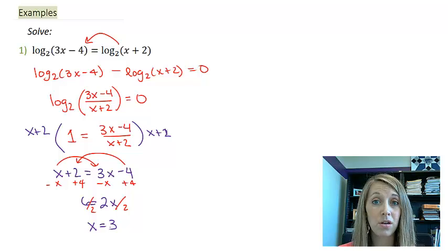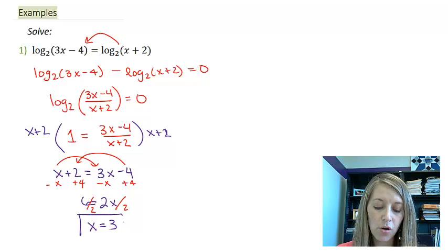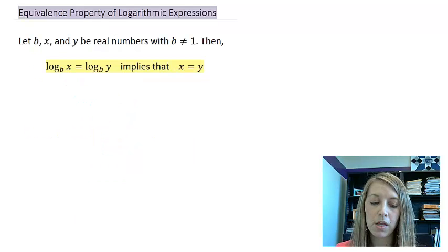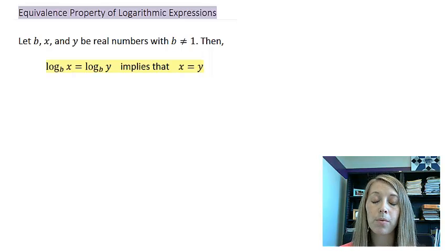And if I were to divide by 2, that gives me the solution of x is equal to 3. So this one is nothing new, nothing different than what we've done in the past few examples. But let me show you maybe a simpler way that we could go about this one. And that is by using the equivalence property of logarithmic equations. So we've seen the equivalence property of exponential. It says if I can make the bases the same,